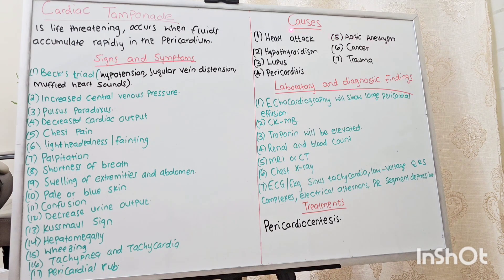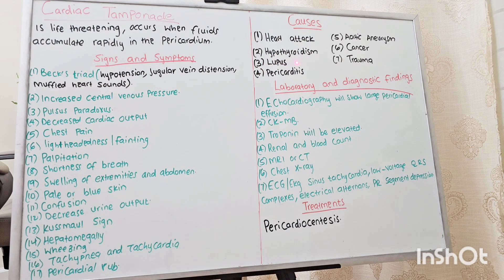Now let's talk about causes of cardiac tamponade. One of the causes is heart attack, hypothyroidism, lupus, pericarditis, aortic aneurysm, cancer, and trauma.